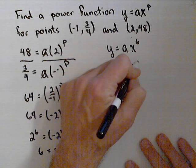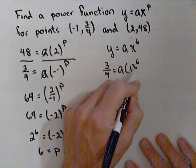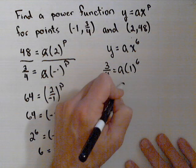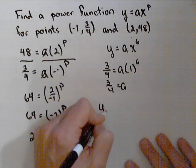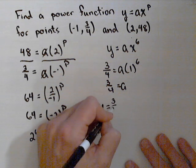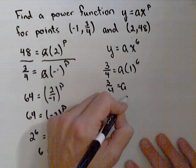Because I know that y has to be 3/4 when x is 1. 1 to the sixth is just 1. So this is going to be 1. So I get a equals 3/4. And I've got my power function: y equals (3/4)x to the sixth.